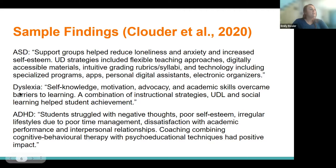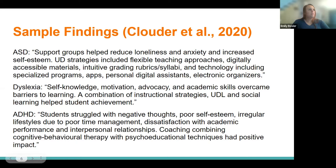For students with dyslexia, self-knowledge, motivation, advocacy, and academic skills overcame barriers to learning, and a combination of instructional strategies, universal design for learning, and social learning helps student achievement. This is just one piece of the puzzle — there are other aspects in terms of support groups, and we might be dealing with mental health issues that stem not from the neurodiverse condition itself but from the attitudes and actions of society that contribute to loneliness and anxiety.